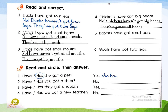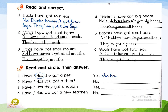Number five: 'Rabbits have got small ears.' No, rabbits haven't got small ears — they have got big ears. And the last sentence: 'Goats have got two legs.' No, goats haven't got two legs — they have got four legs.